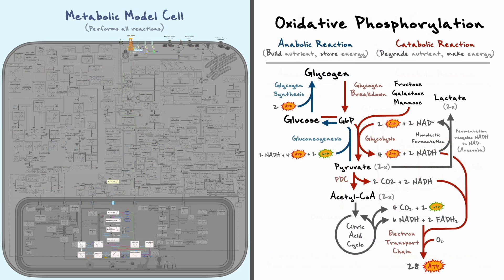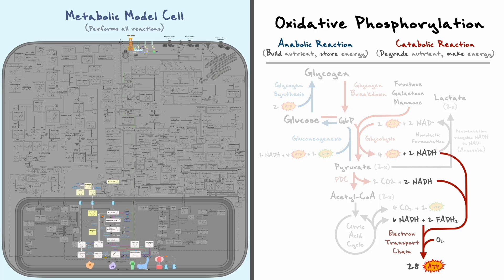Alright, with the PDC and the citric acid cycle covered, we are now ready to consider how the electron transport chain takes the NADH and FADH2 produced in previous steps and uses them to make ATP.